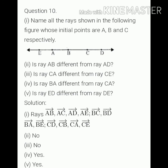Part three is, is ray CA different from ray CE? No, both are the same. Because both origin points are the same, point C. Means both are emerging from point C, so both are the same.